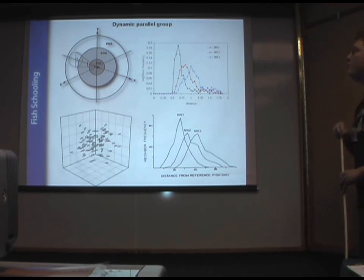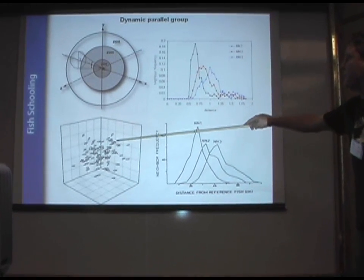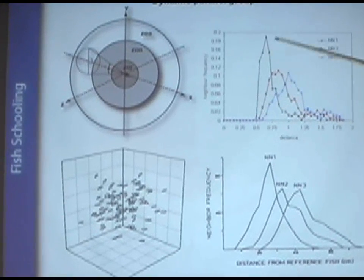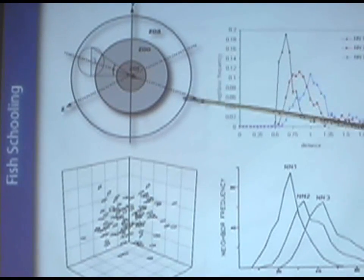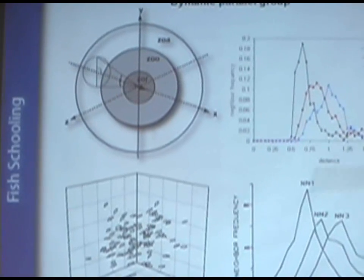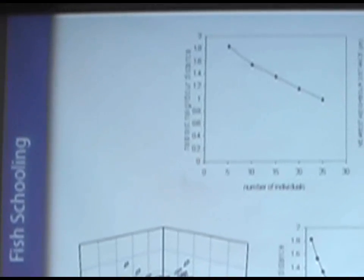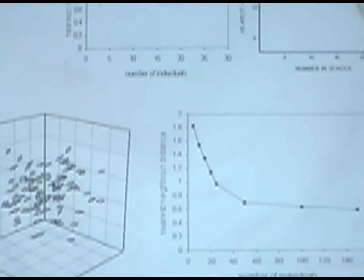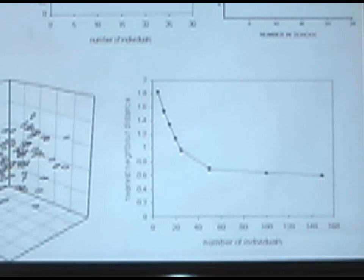But when we actually try to compare our models, these types of simulations, with reality, we do get a pretty good fit. If we look at the nearest neighbor distribution, for example, in this simple model, we get a very similar fit to the real data as we do in the experiments. And we also, as you increase the number of individuals in the group, the nearest neighbor distance decreases, the group compacts more, which is exactly what we find in reality.